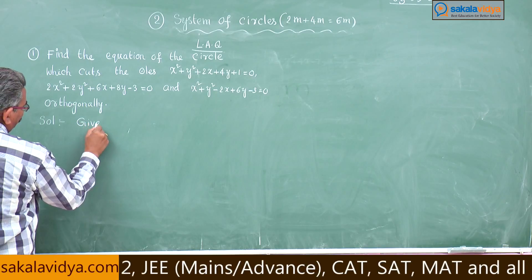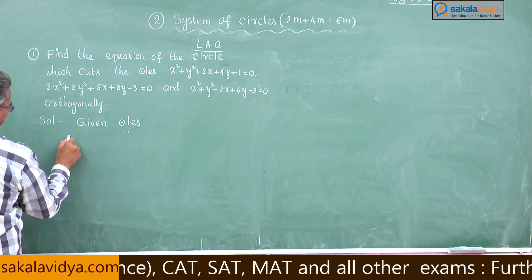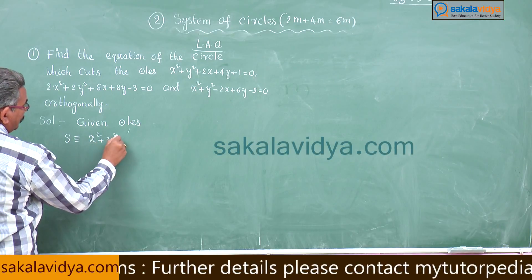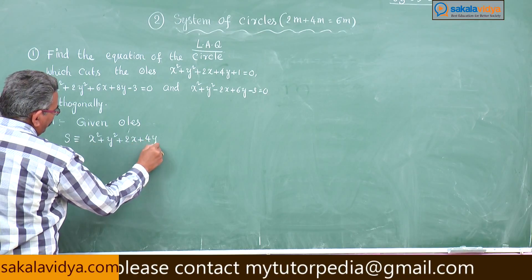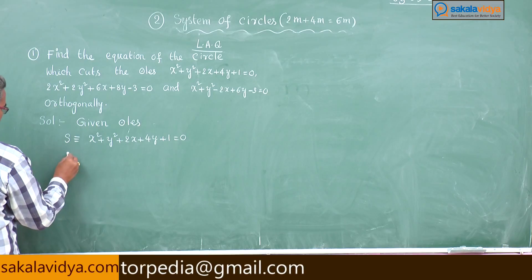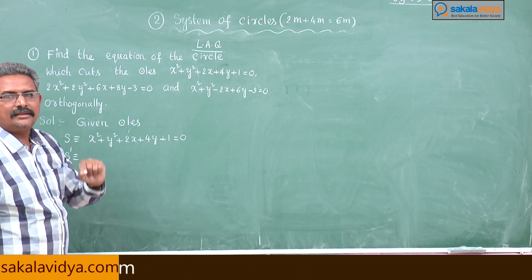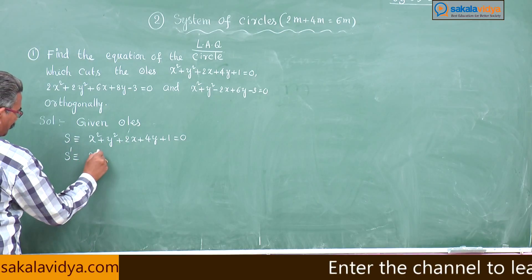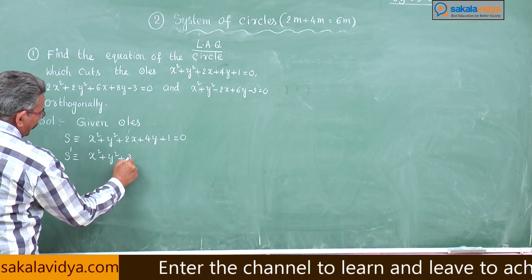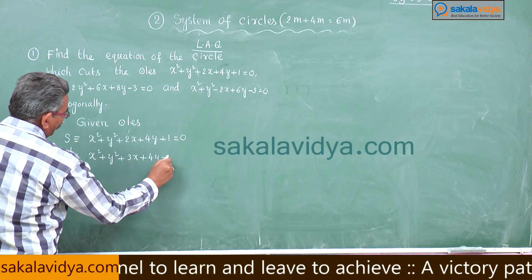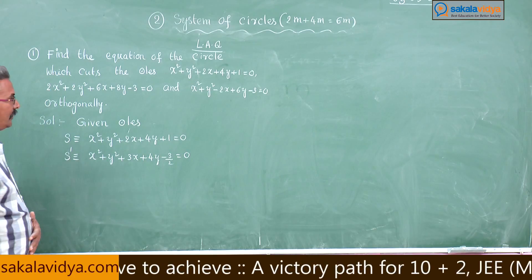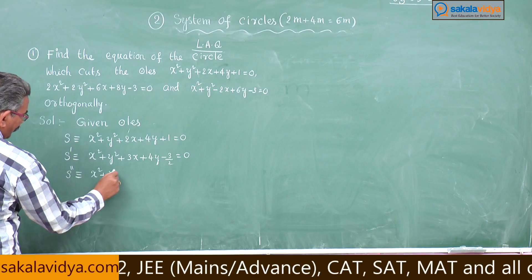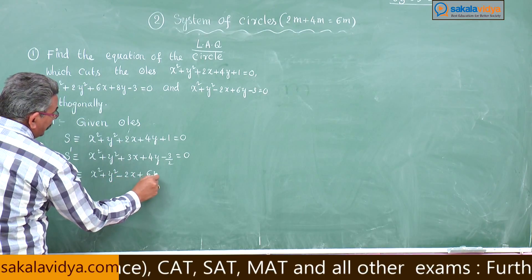Given circles: S = x² + y² + 2x + 4y + 1 = 0. S' — this is not in general form, so dividing by 2: x² + y² + 3x + 4y − 3/2 = 0. S'' = x² + y² − 2x + 6y − 3 = 0.